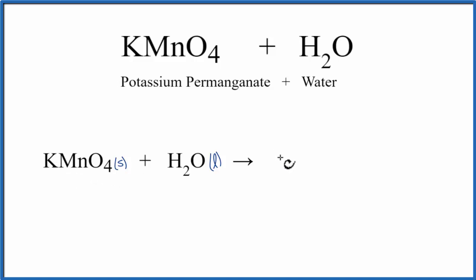That'll be K+ for the potassium, plus the permanganate ion, the MnO4, which has a minus charge.